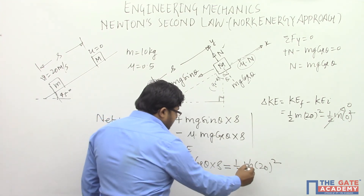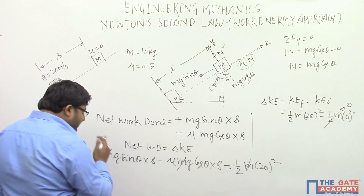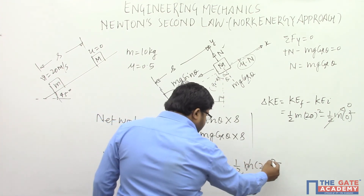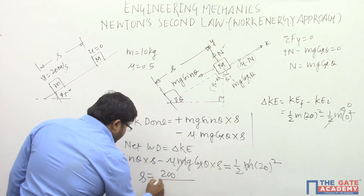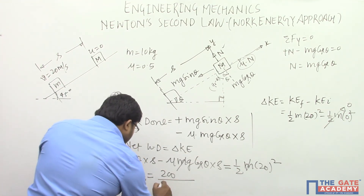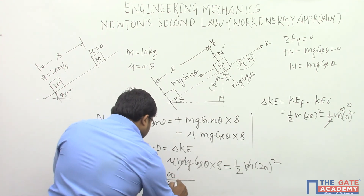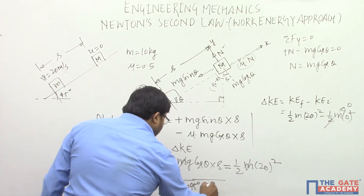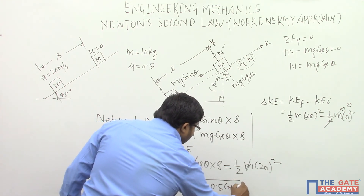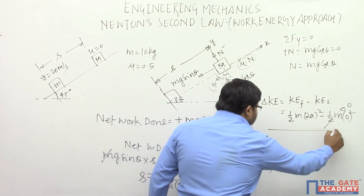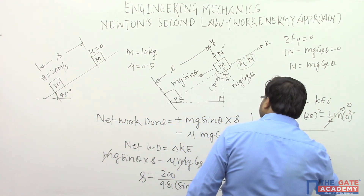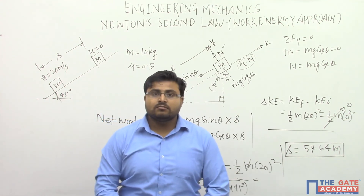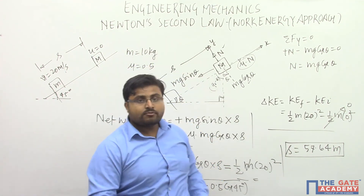Mass m cancels from the equation. Putting in values: S = (400/2) / [g·(sin 45° − μ·cos 45°)] = 200 / [9.81 × (sin 45° − 0.5 × cos 45°)]. Solving, we get S = 57.64 meters. That is the way to apply the work energy theorem to Newton's second law problems. Thank you.